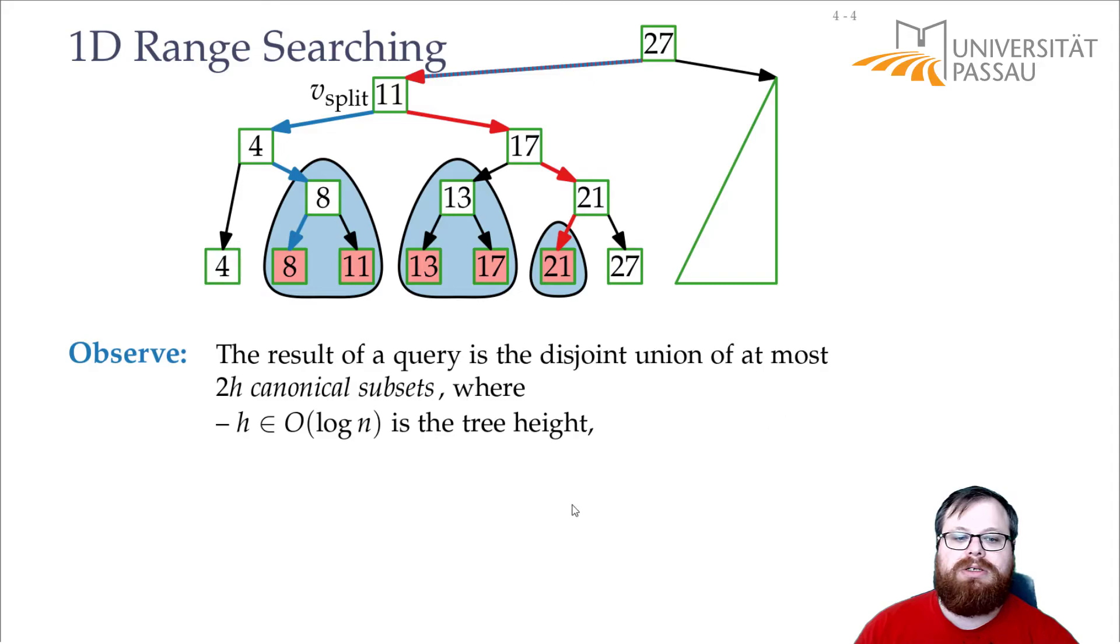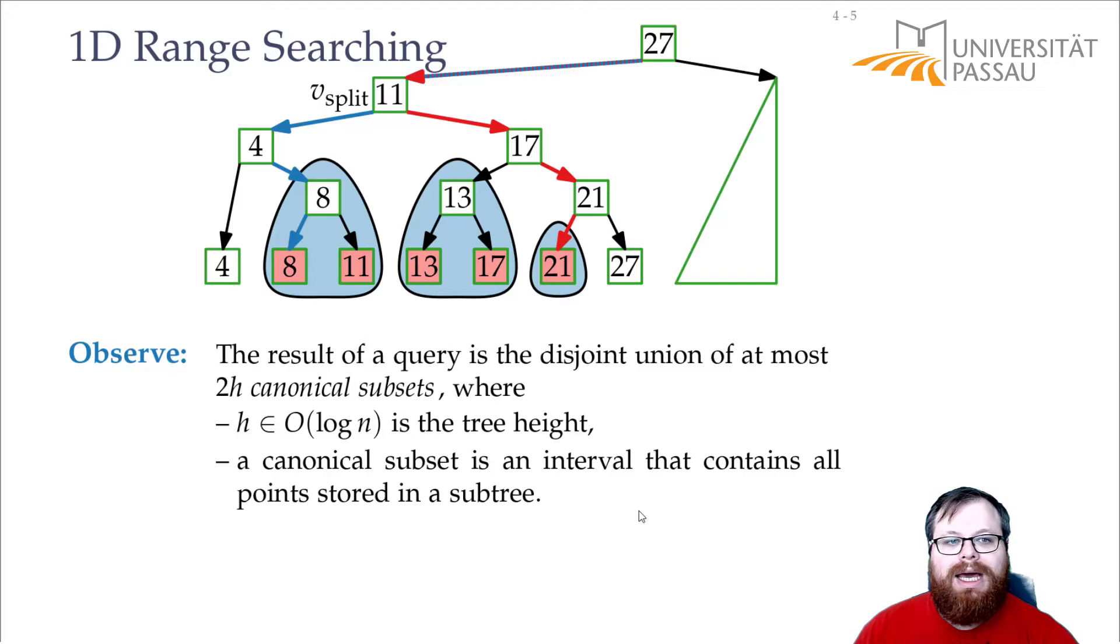And since it's a balanced binary search tree, the height is an order of log n. So we have an order of log n many canonical subsets. And each canonical subset gives us an interval that contains all points stored in the subtree.